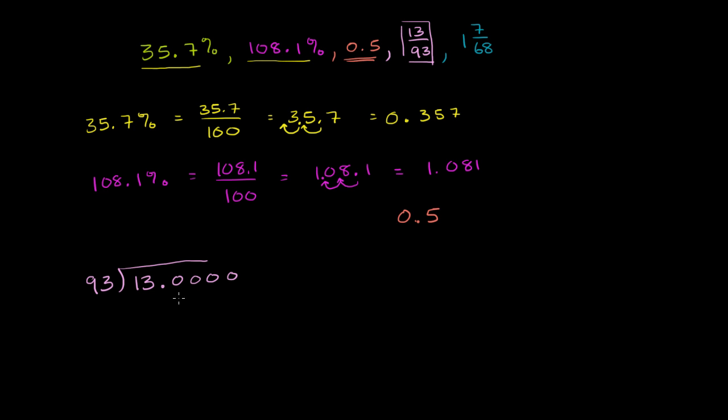So we're going to have things to the right of a decimal point. I added some trailing zeros here to the 13, didn't change its value, and I'm going to put the decimal right up there. 93 goes into 13, well it doesn't go into 1, it doesn't go into 13, but it does go into 130. 93 goes into 130 one time. 1 times 93 is 93. And now we subtract. 130 minus 93 is 37.